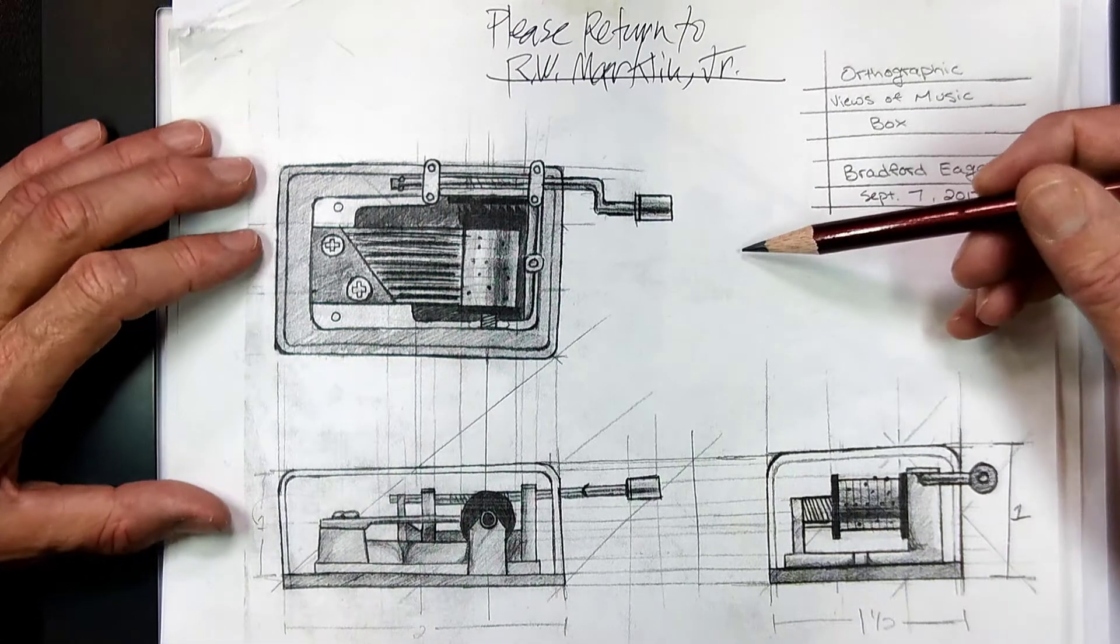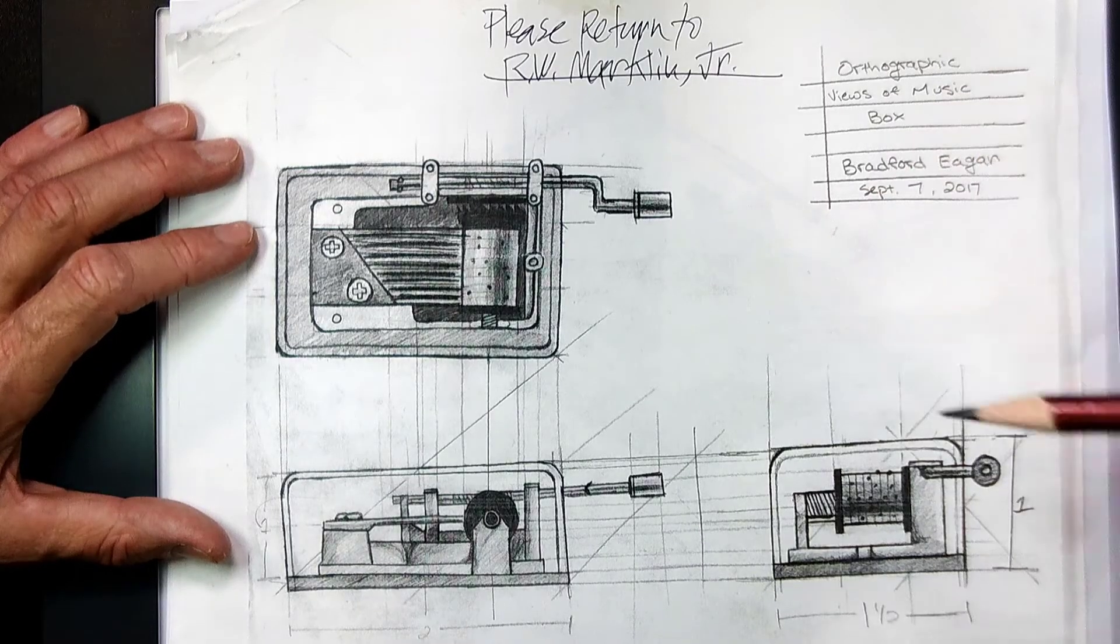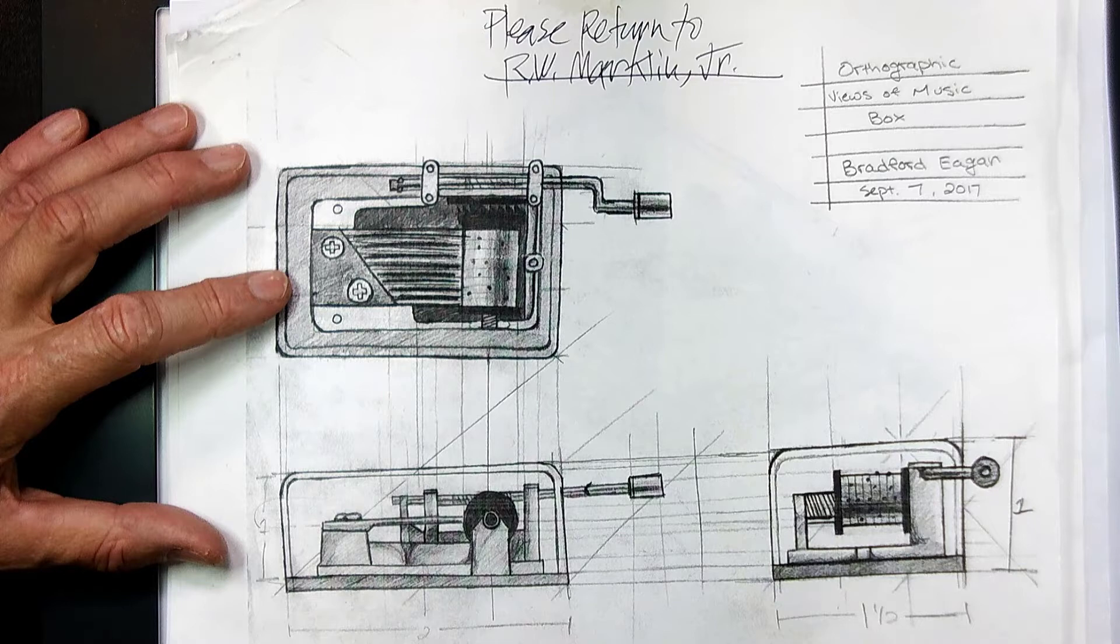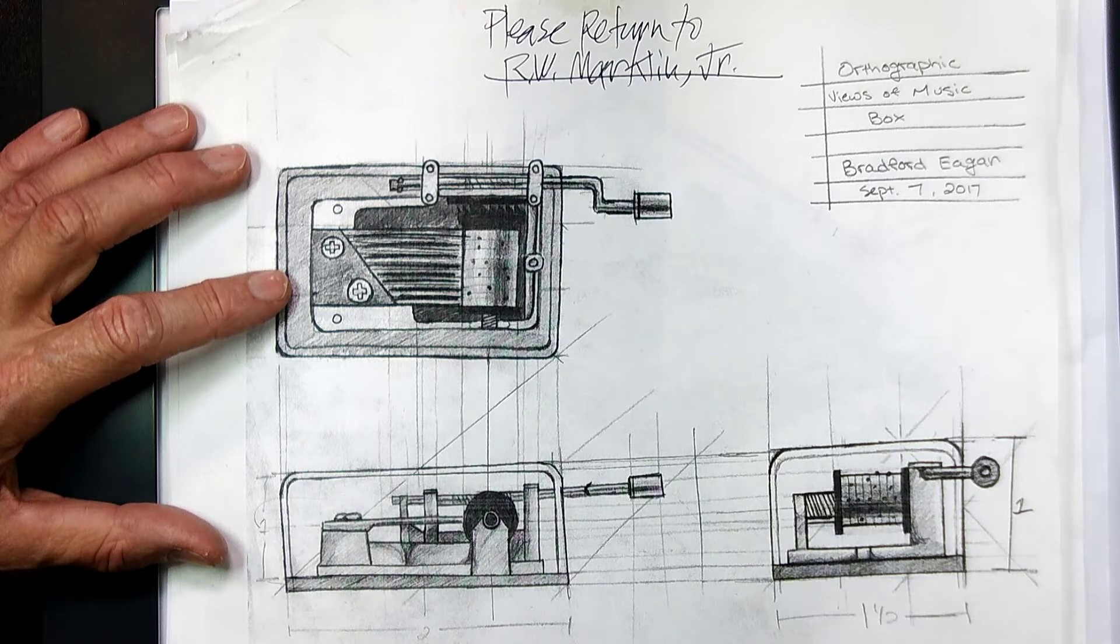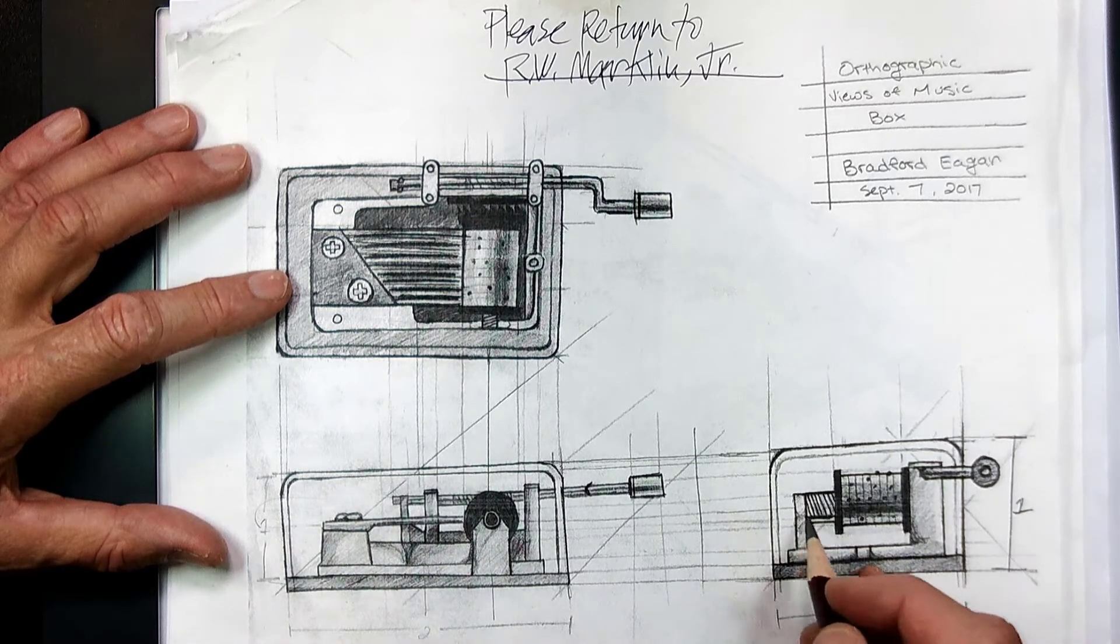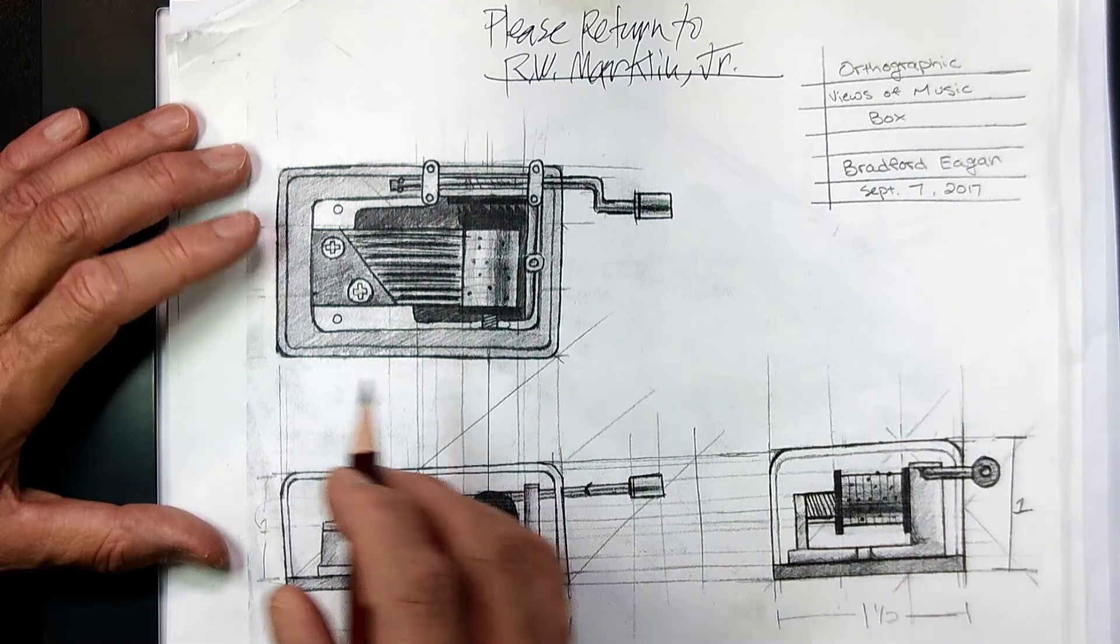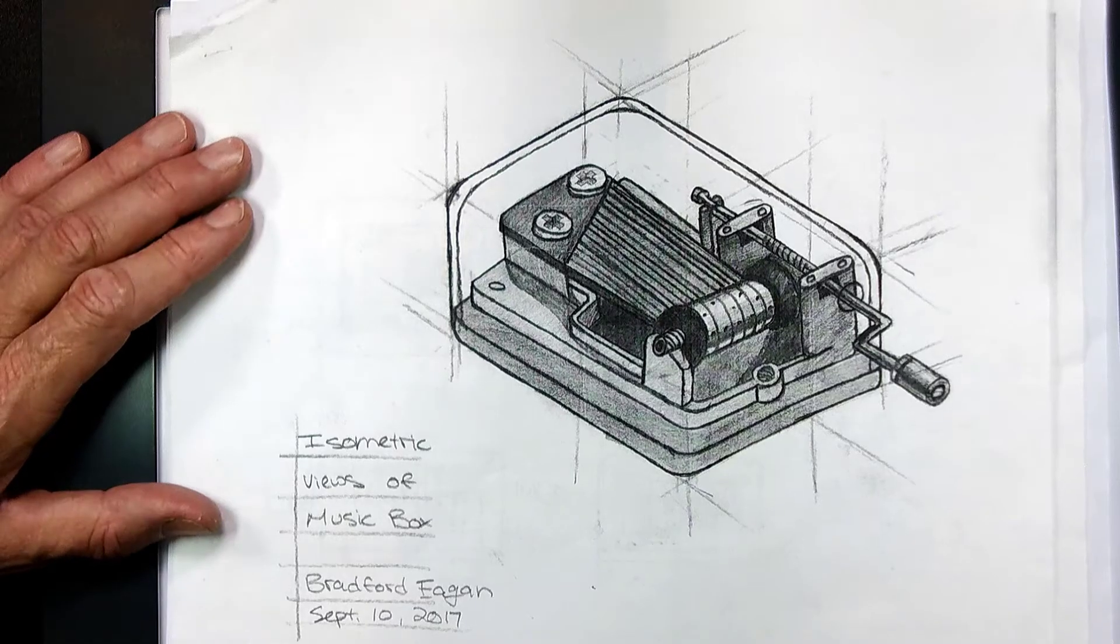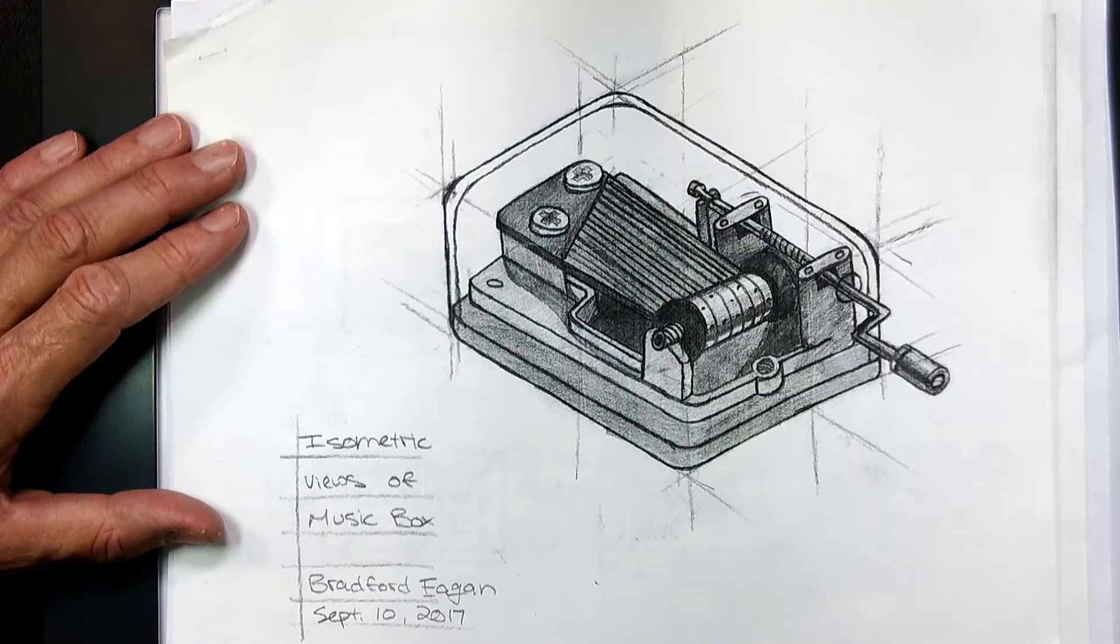This is a set of orthographic drawings. And you have the front, the side and the top of a music box. These were all done freehand. You can see the parallel lines, no rulers, no grid paper.